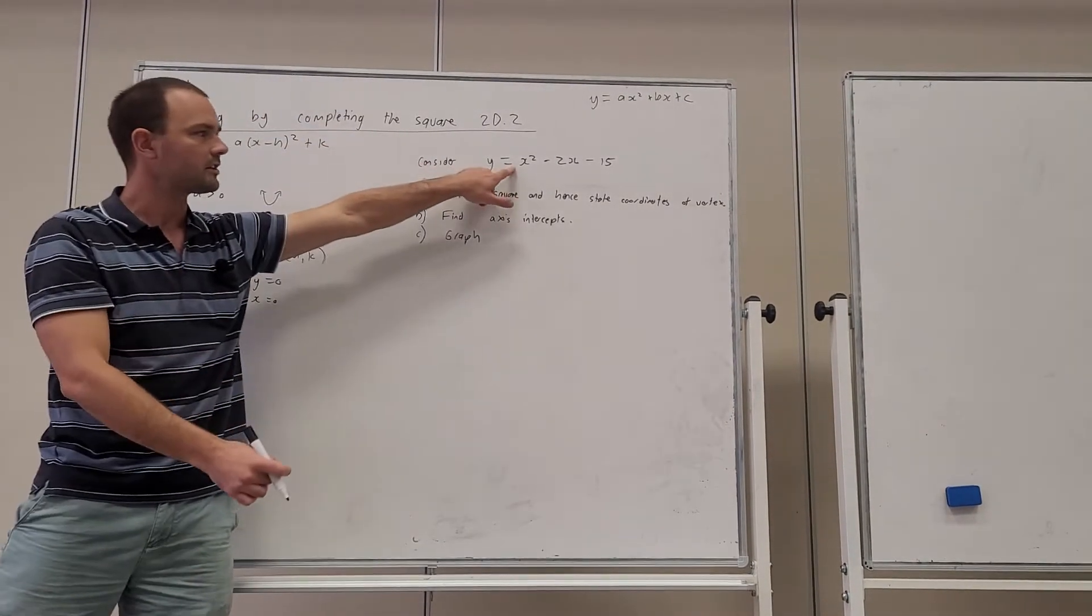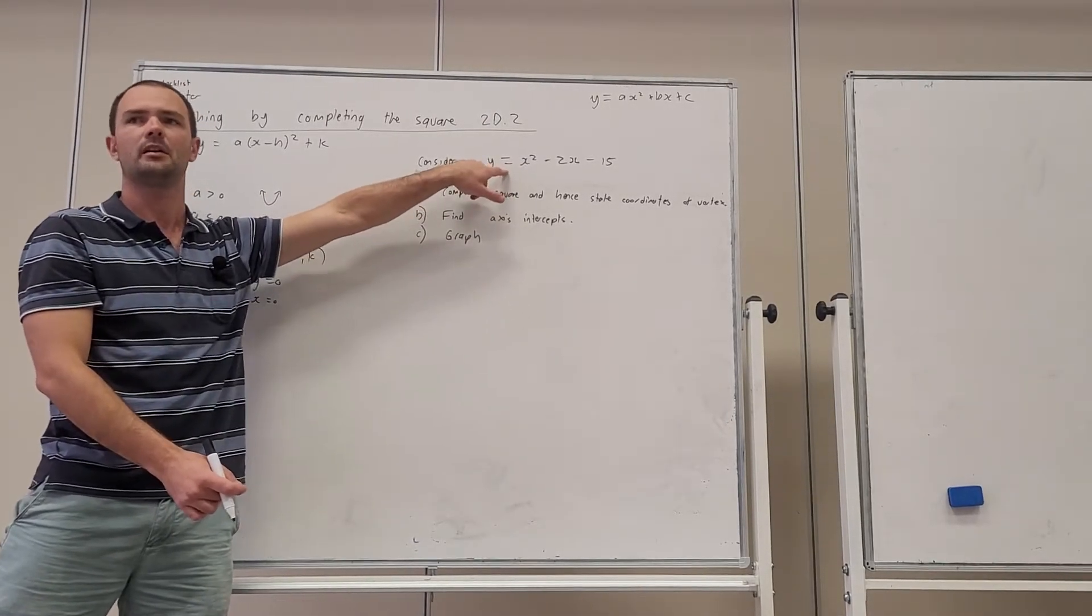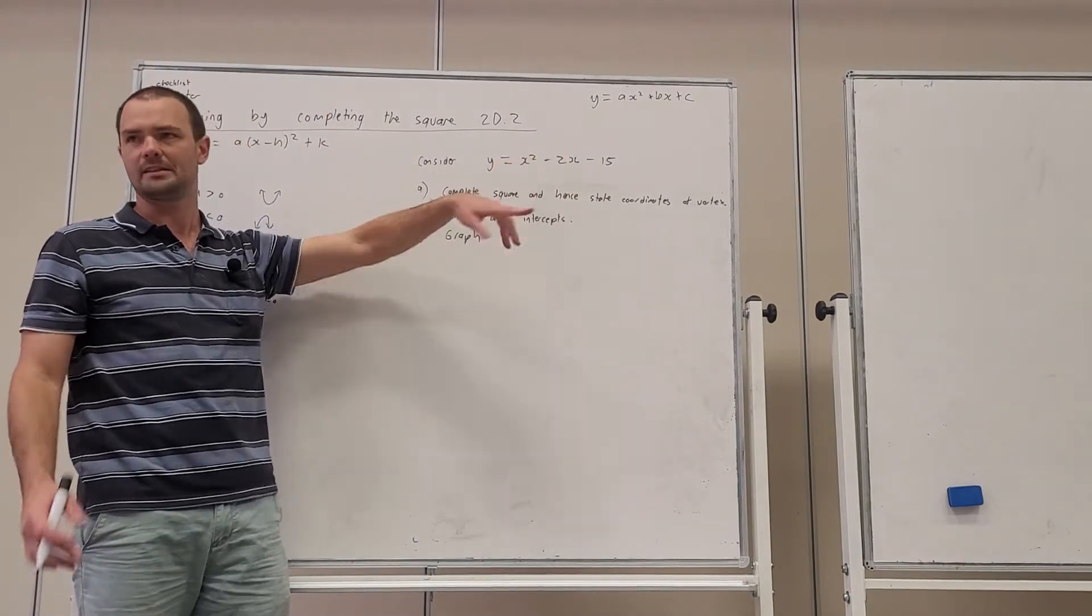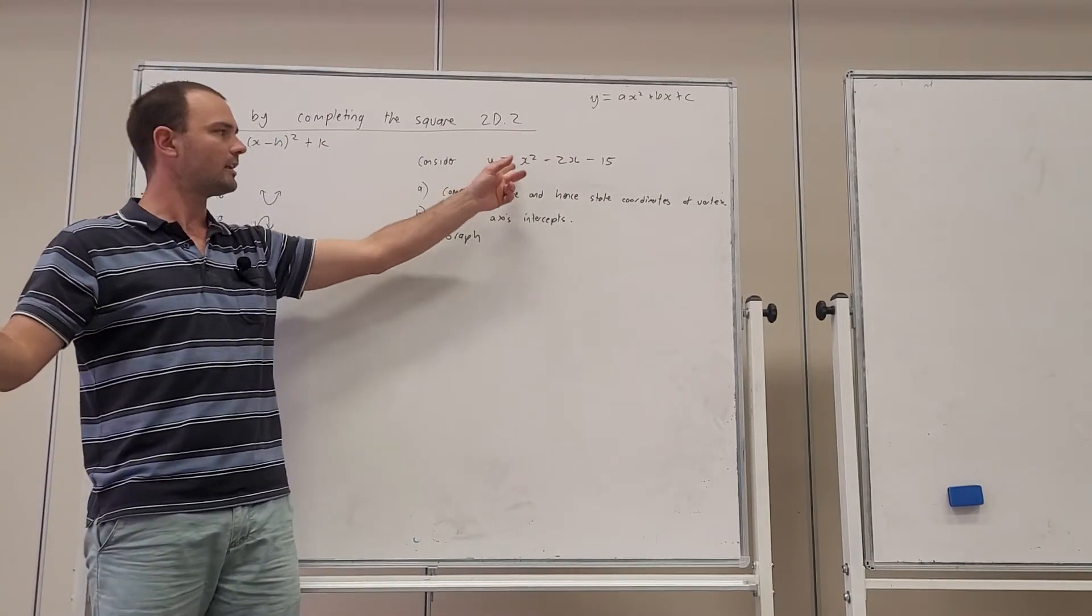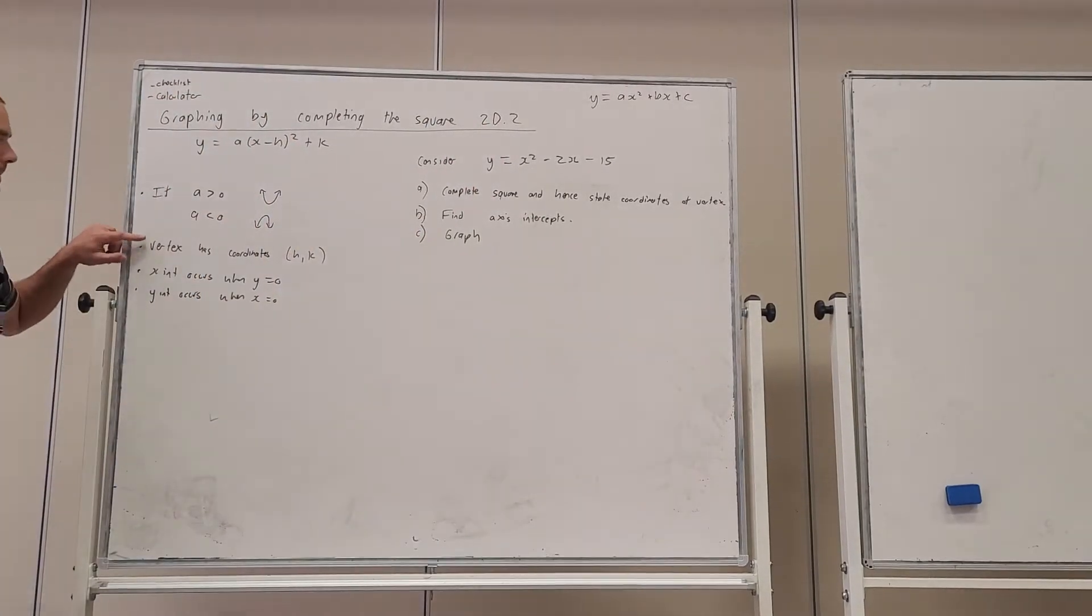So a is always the coefficient of x squared, the number out the front. In our first example here, what's the number out the front? It's positive one. It's invisible, arbitrary. You don't need to write it. But it's positive one, which means it's opening upwards. This one's going to open up.